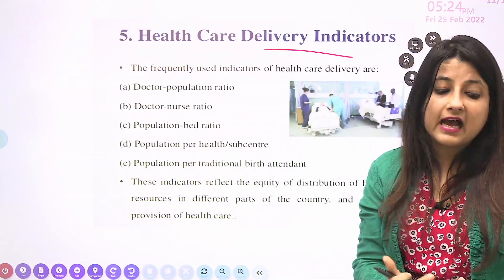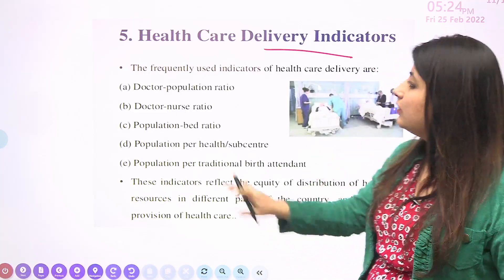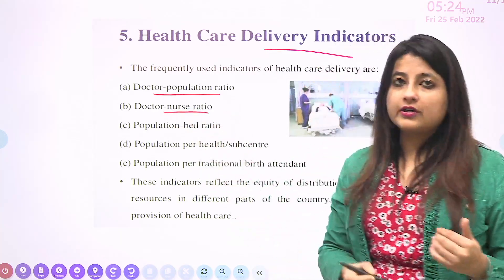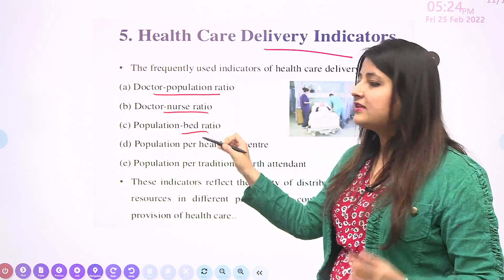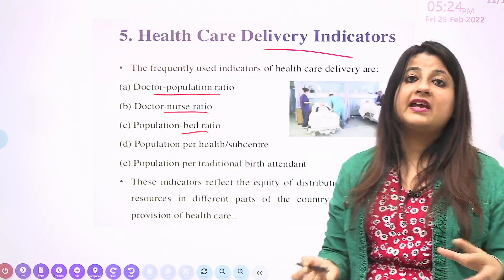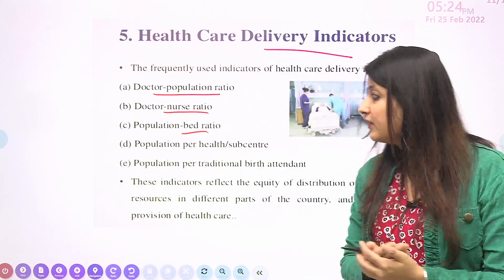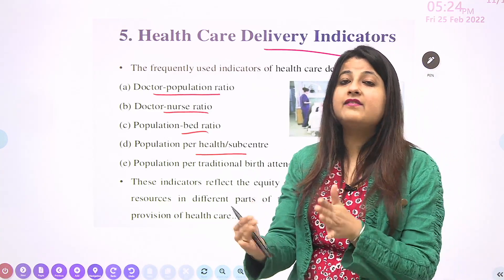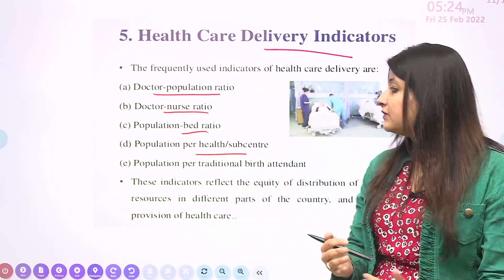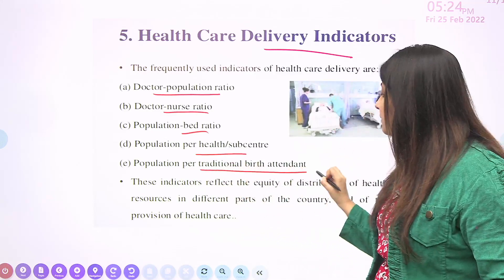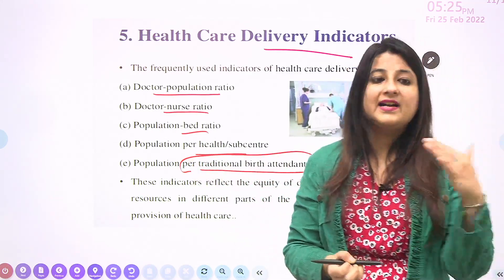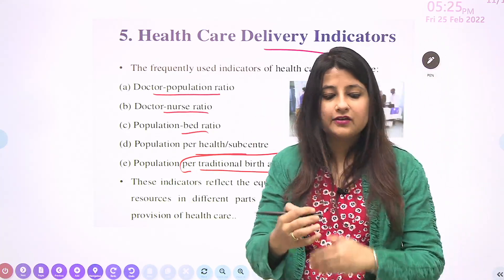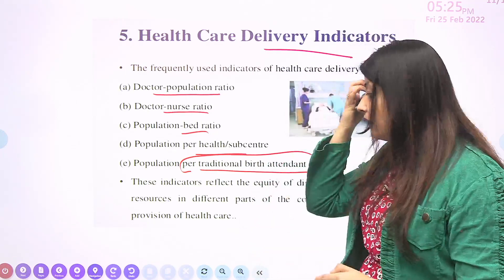Healthcare delivery indicators refer to what our government is providing us. This includes: how many doctors per thousand population, how many nurses per doctor — ideally three nurses per doctor but currently in India only 1.5 — population-bed ratio, population per health sub-center — one sub-center for 5,000 population in plain areas and 3,000 in hilly areas — and one traditional birth attendant per thousand population.